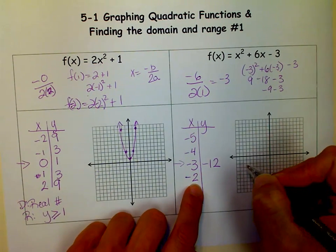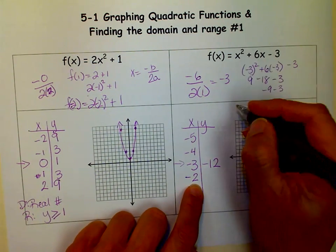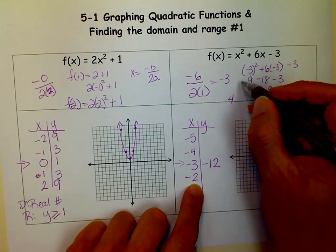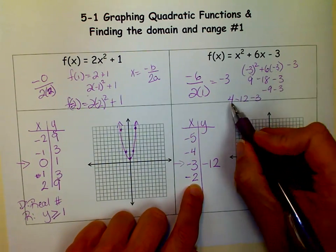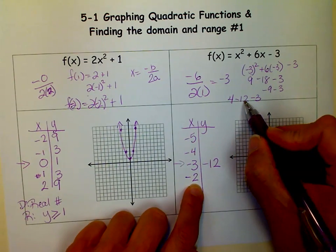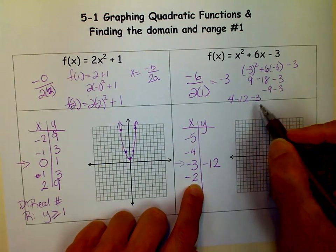If I put a negative 2 in, negative 2 squared is 4. 6 times negative 2 is negative 12 minus 3. So 4 minus 12 is negative 8, minus 3 is negative 11.